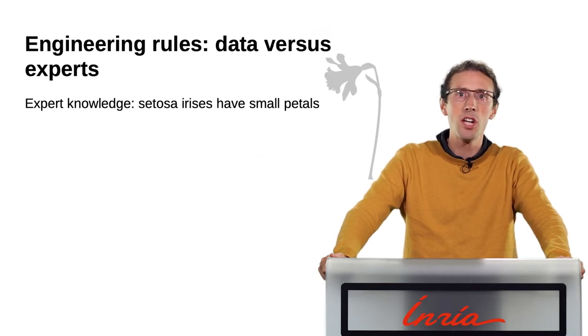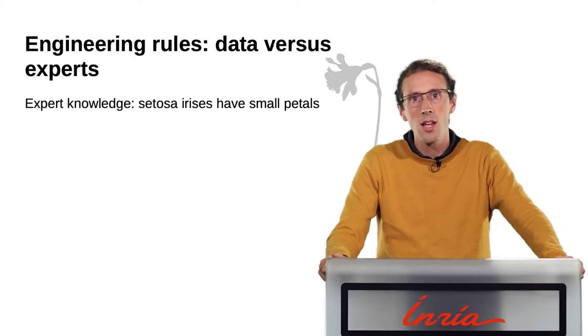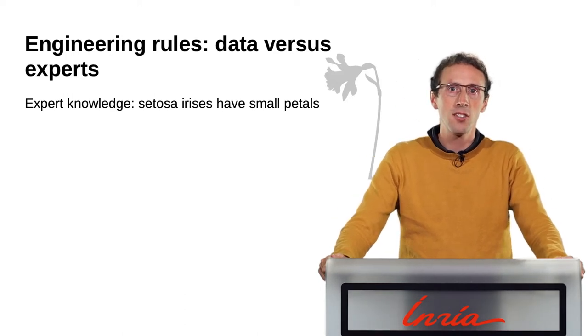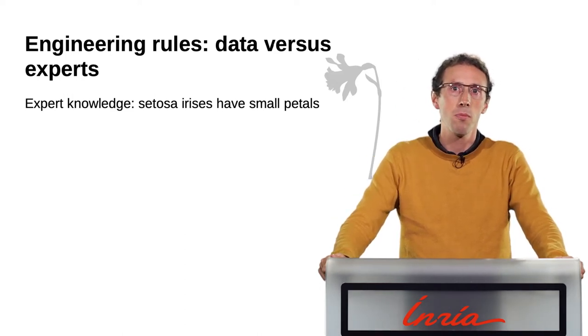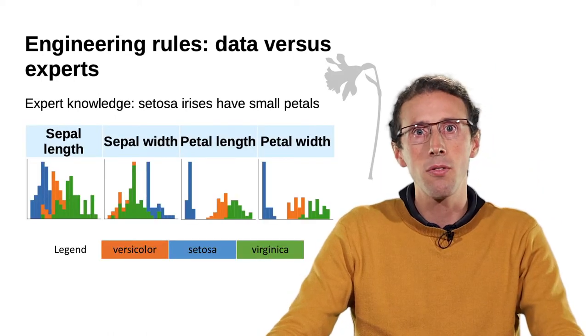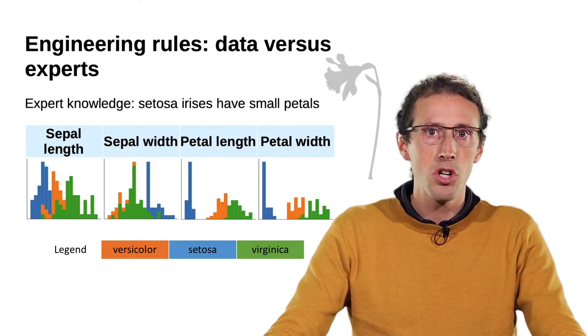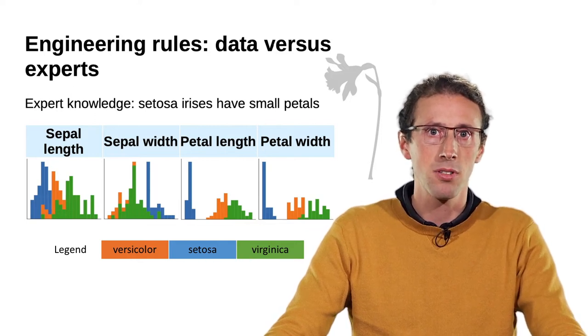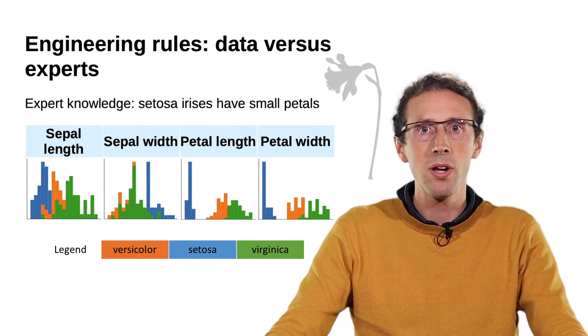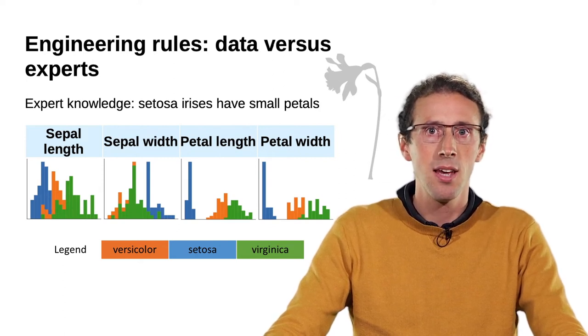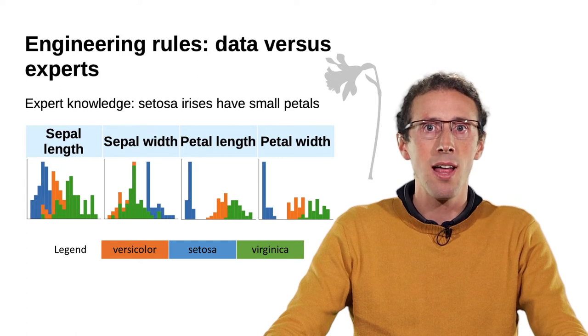So, machine learning is about engineering decision rules from the data. But experts can also engineer decision rules from their knowledge of the problem. For instance, flower experts know that setosa irises have small petals. This rule can also be inferred by looking at the data. If we look at the distribution of the sepal and petal measurements of the different iris species, we can see that petal length and width single out well setosa.